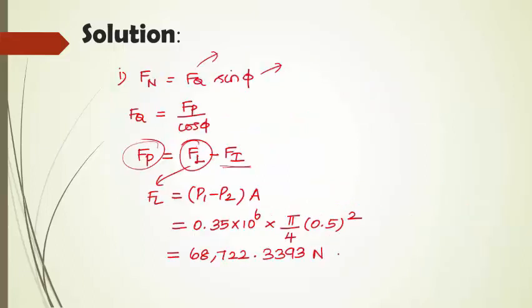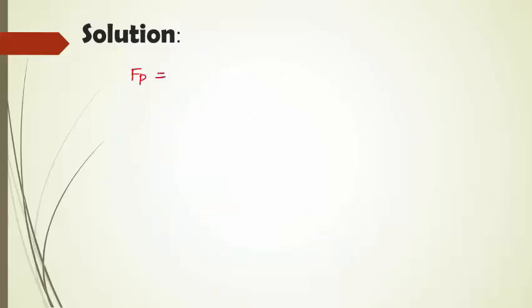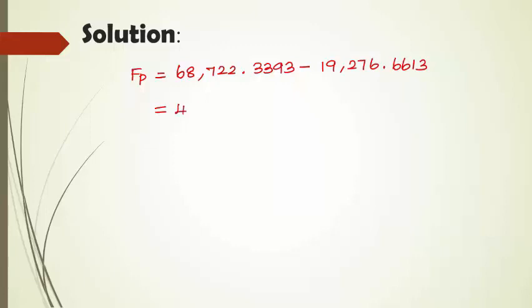Now we can calculate the value of Fp. Fp is Fl minus Fi. Fl is 68,722.3393 newton, minus Fi which is 19,276.6613 newton. So the Fp value is obtained as 49,445.678 newton.